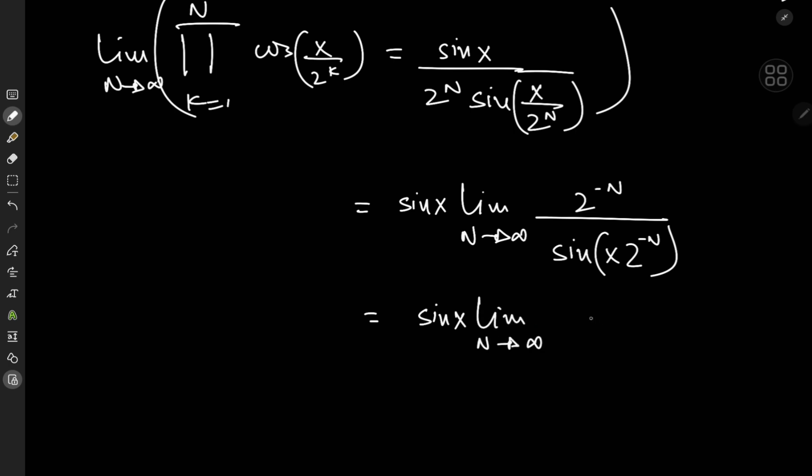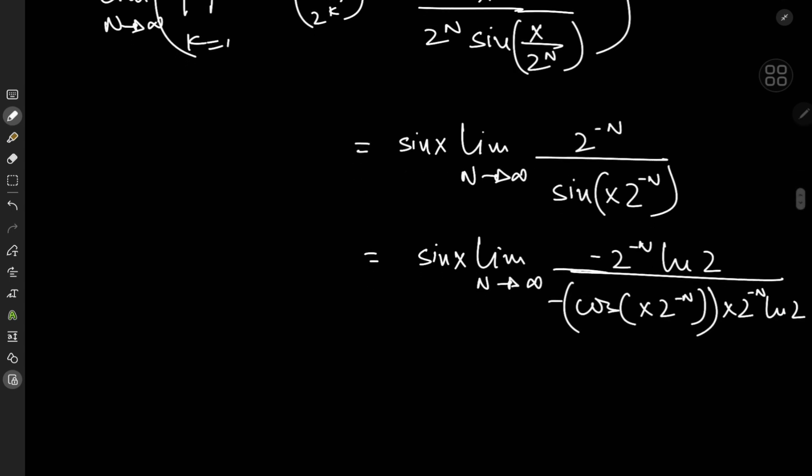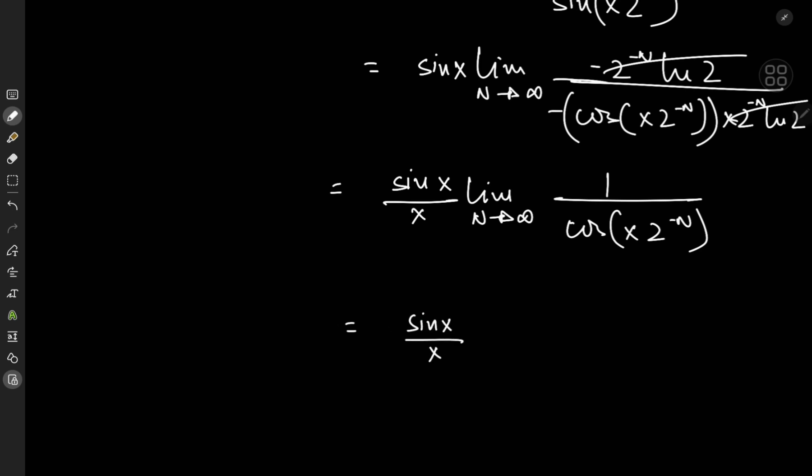Giving me the limit as n tends to infinity of negative 2 to the negative n times log 2 divided by the cosine of x times 2 to the negative n, and because of the chain rule, I have x times 2 to the negative n times log 2 with a negative sign. So there's some cancellation here, and the negatives cancel out as well, giving me sine x by x times the limit as n tends to infinity of 1 by cosine x times 2 to the negative n. So applying the limit gives me sine x by x times 1 by cosine 0, which is 1.